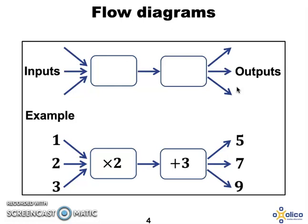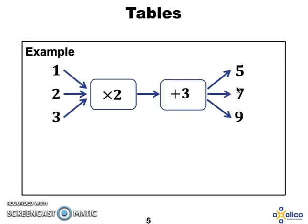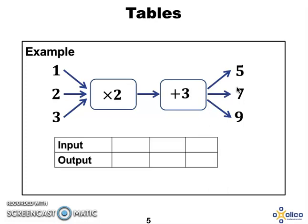We're going to use this flow diagram to help us with our other methods of representing. So when we have a look at a table, a table shows input and output and it shows the input and its corresponding output. So when we put 1 into the flow diagram, the output was 5.